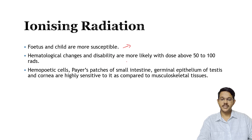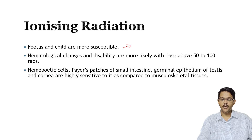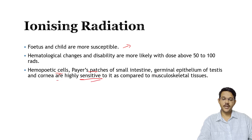Permanent changes and disabilities are more likely with doses above 50 to 100 rads of radiation. Hemopoietic cells, cells of the small intestine, germinal epithelium cells of the testis, and corneal cells are highly sensitive to radiation compared to musculoskeletal tissue, since they are constantly multiplying.